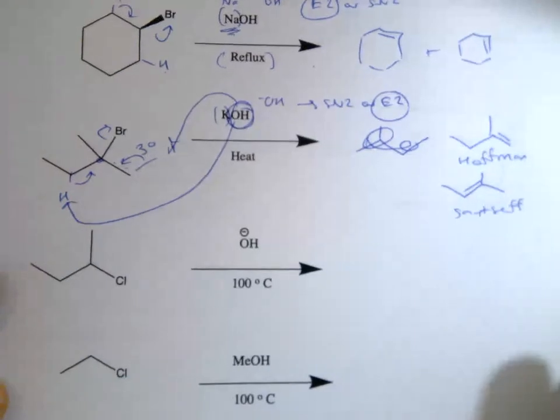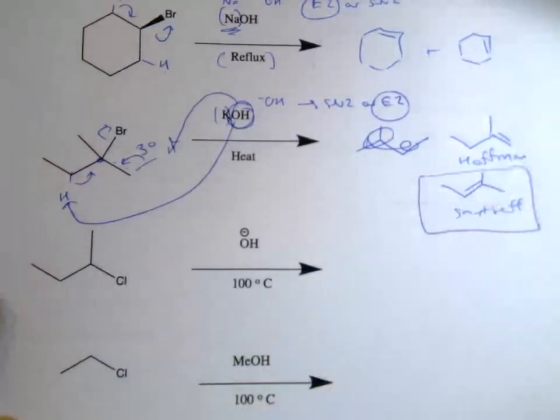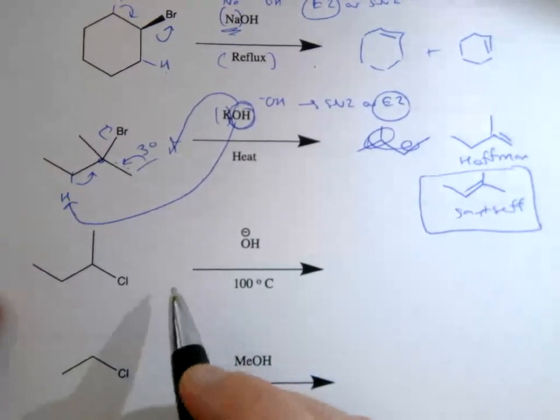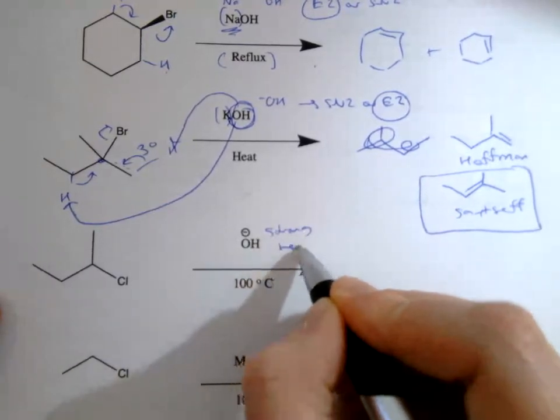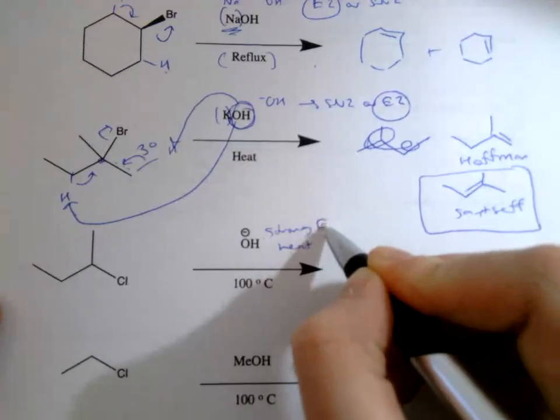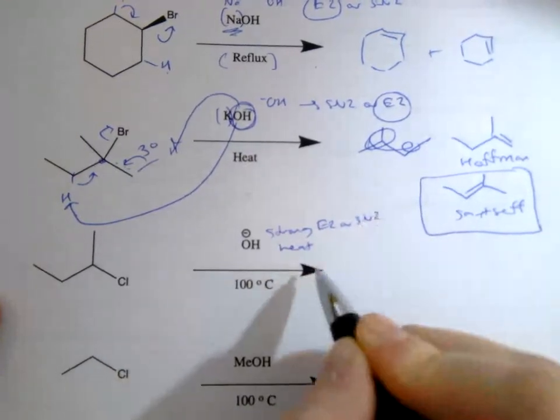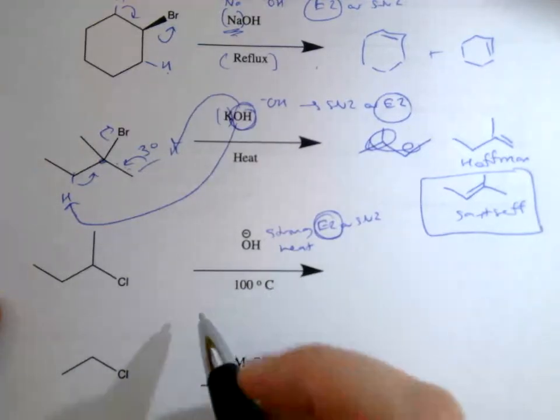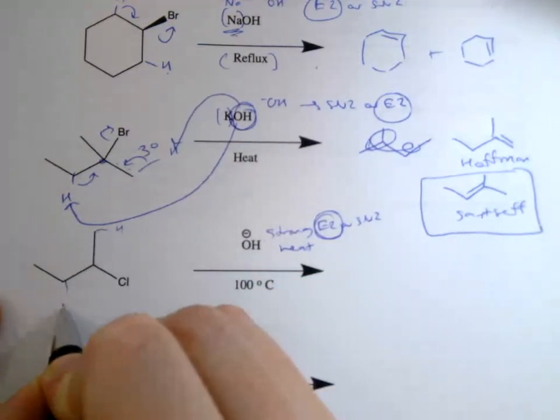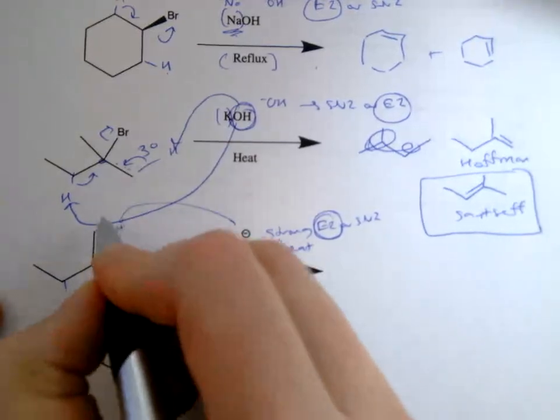Now this next one, this is again a strong nucleophile. We have heat, so that favors E2 or SN2. Heat is going to favor elimination over substitution.